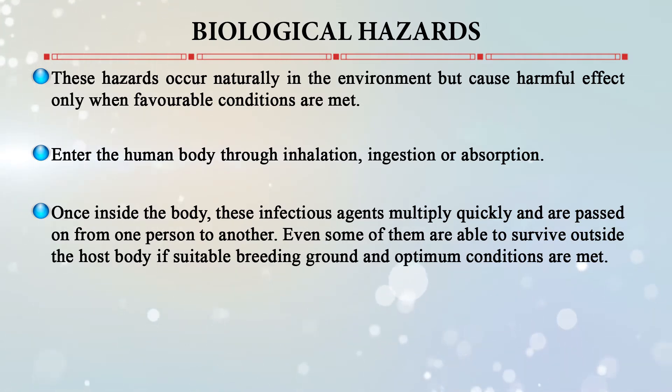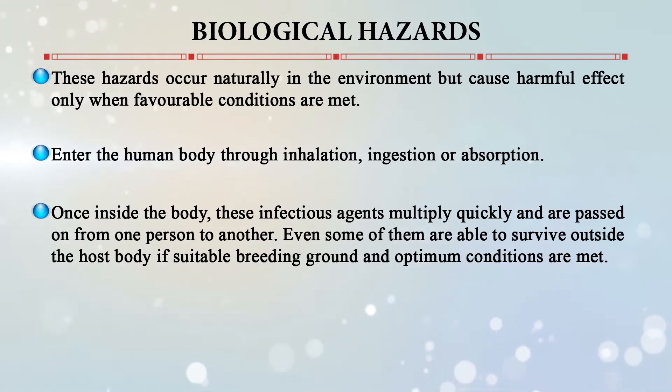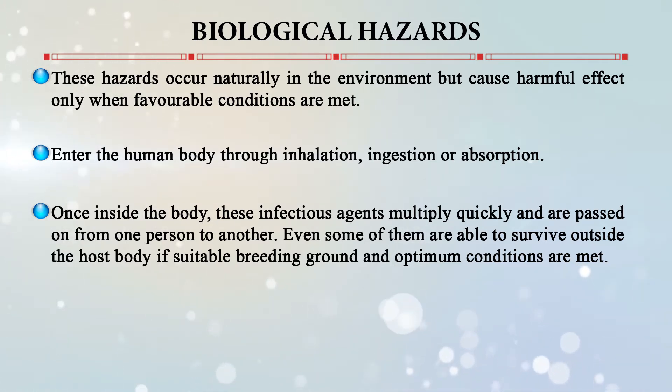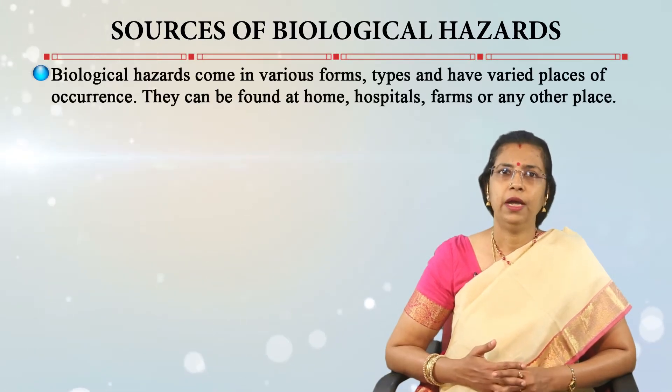Infectious agents can also be passed from one person to another. Some of them are able to survive outside the host body, but the suitable breeding ground and optimum temperature conditions must be met for their survival. The extent of damage by these hazards is determined by the particular toxicity of a substance — for example, bacteria may produce a specific toxin, and viruses can also produce a certain reaction and be transmitted from one person to another through human-to-human transmission.